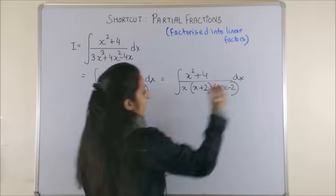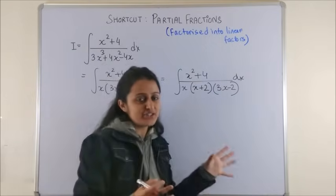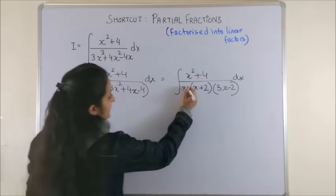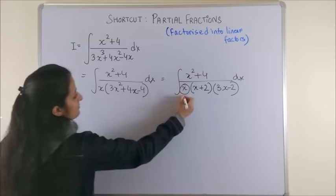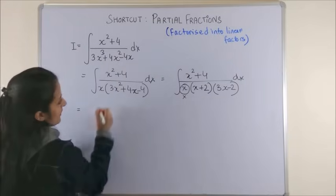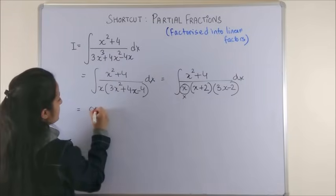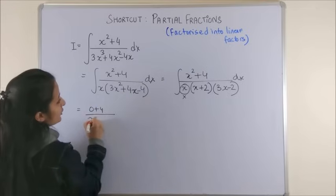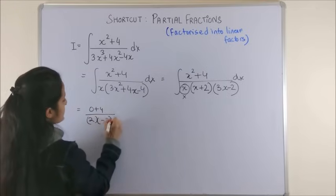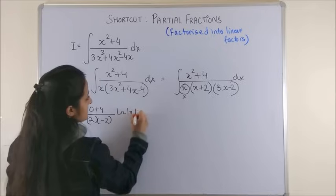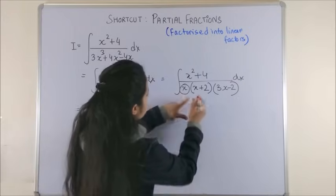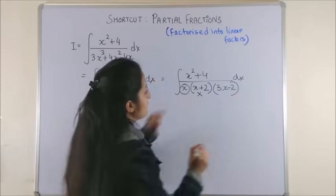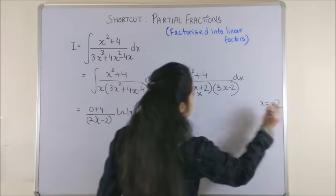Having done this, now instead of the traditional method, once again if you put this as zero, barring this put zero everywhere else. So this would be zero plus four upon two into minus two, log mod x. Plus, next time put this factor as zero, that gives us x equal to minus two.